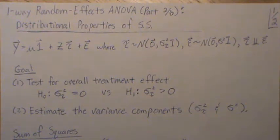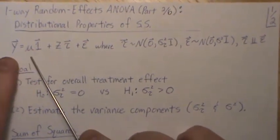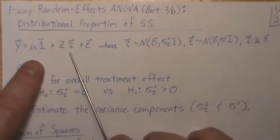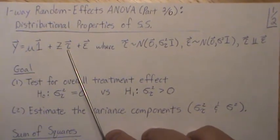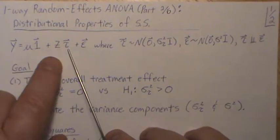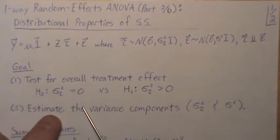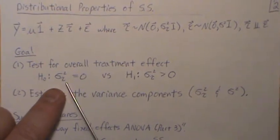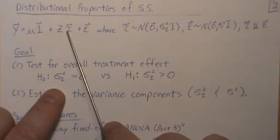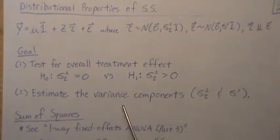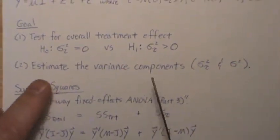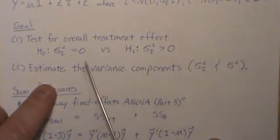Hello, this is the next video in a playlist I'm calling General Linear Models Design of Experiments. This is part two in a mini-series on one-way random effects ANOVA, where we're going to look at the distributional properties of the sum of squares. As a reminder, the model here is a one-way random effects model — the taus are normally distributed, the epsilons are normally distributed, they're independent, and the goal is to test whether the variance associated with these levels is zero or not. To do that, we have to estimate the variance components.